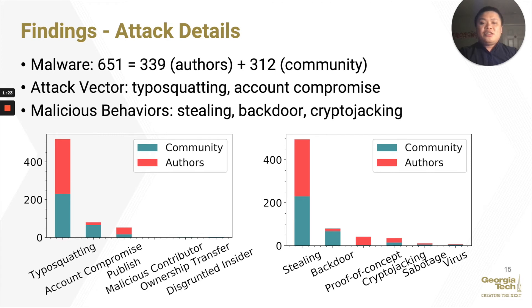This plot shows the breakdown of malware by malicious behaviors. We note that stealing, backdoor, and cryptojacking are popular among these behaviors. Our further investigation shows that many of the stealing cases are actually just collecting machine and user information, which is less severe. In contrast, backdoor is actually severe because it allows full takeover. On the other hand, cryptojacking is getting increasingly popular, probably because it allows monetization even without high permissions.